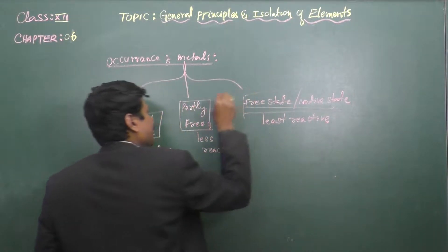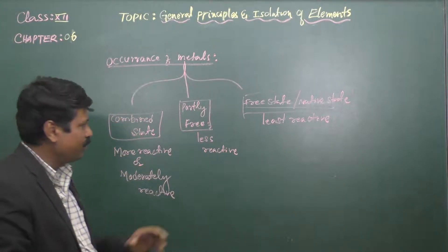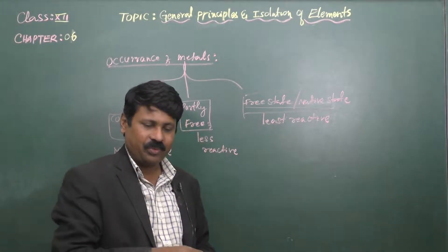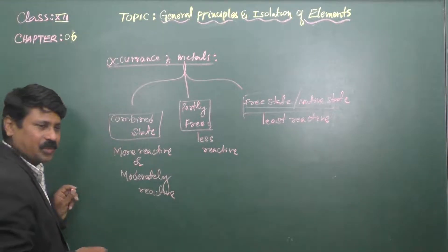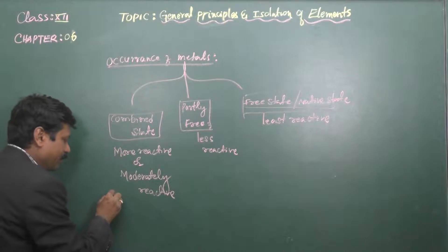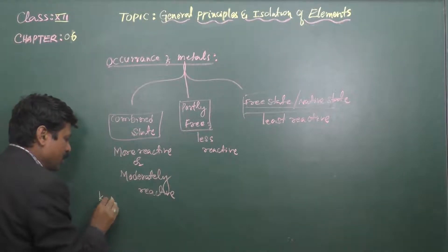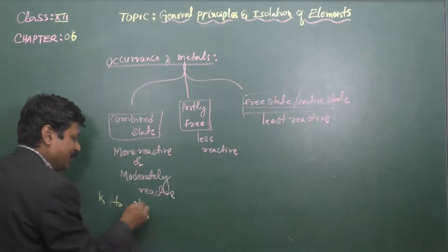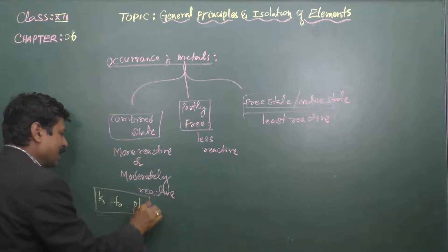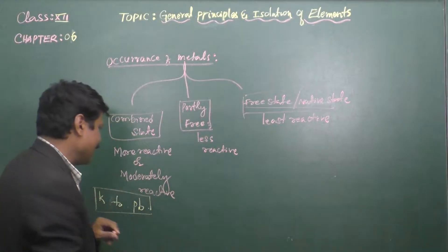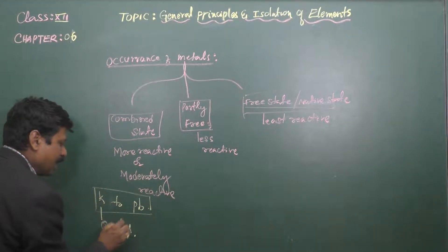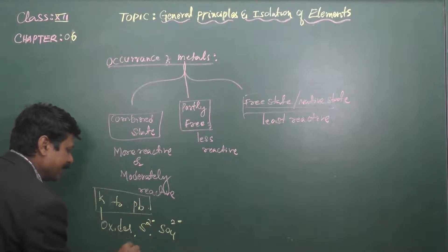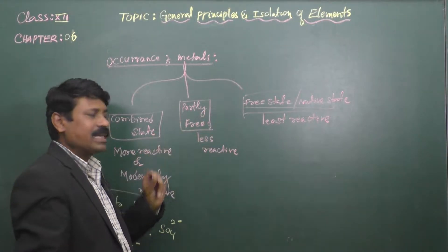Using the metal activity series, metals from potassium down to lead — those which appear above hydrogen — are more reactive or moderately reactive. These metals occur in the combined state, either as their oxides, sulfides, sulfates, or halides.